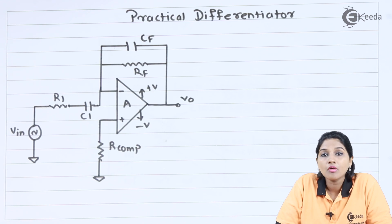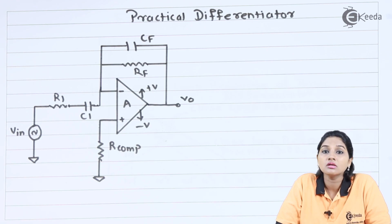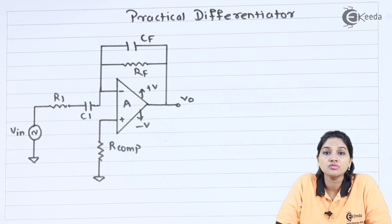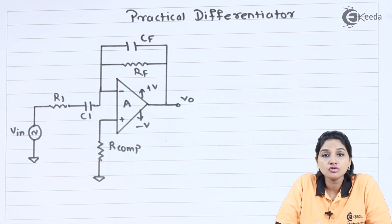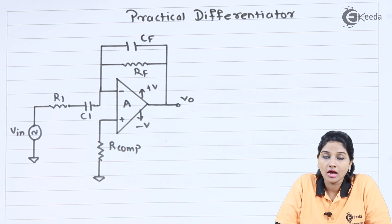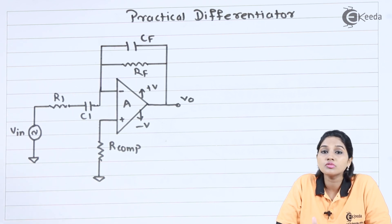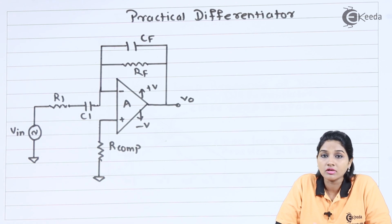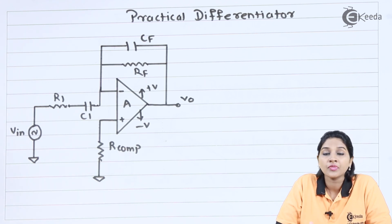The other problem associated with the basic differentiator is the addition of high frequency noise which appears at the output. Due to the introduction of R1, as gain can be controlled at high frequency, the noise voltage present can also be controlled by using resistor R1 connected in series with capacitor C1.